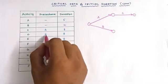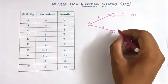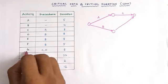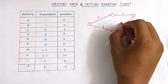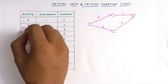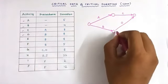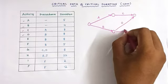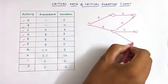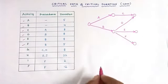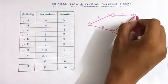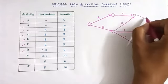D activity will start after the completion of B activity, so we can draw D activity. We place D here because in G, both C and D are in the precedence relationship. So after completion of C and D, G will be started. Next, E activity is drawn. F also has the preceded relationship of B, so we draw F here. Then we draw G activity, where C and D are the preceded relationships.